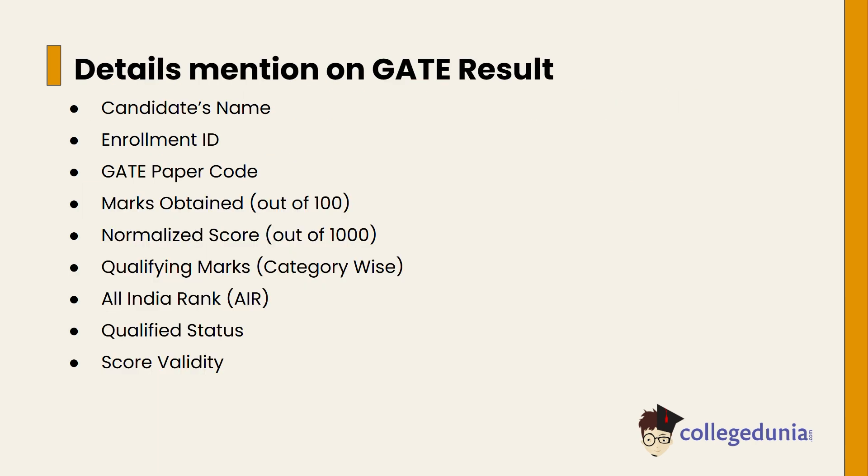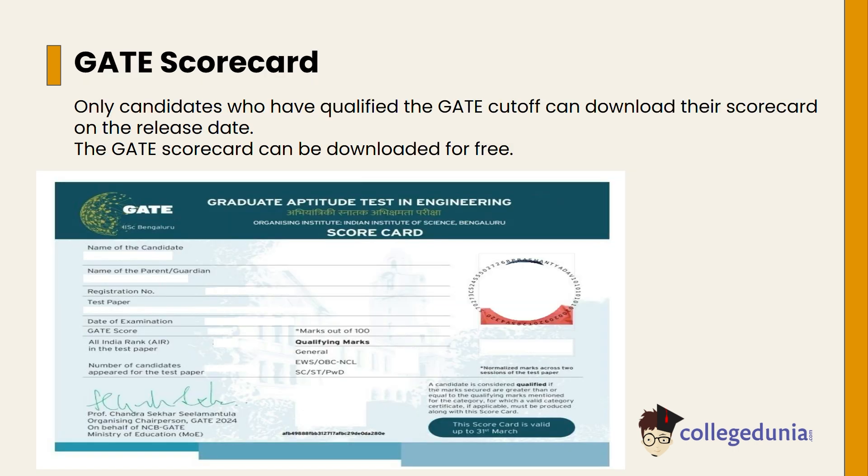The details mentioned on the GATE result include: candidate's name, enrollment ID, GATE paper code, marks obtained out of 100, normalized score out of 1000, qualifying marks category-wise, All India Rank, qualified status, and score validity.